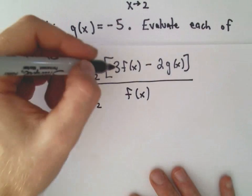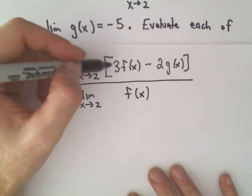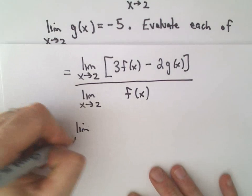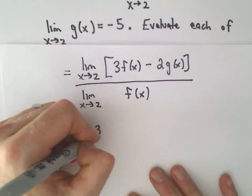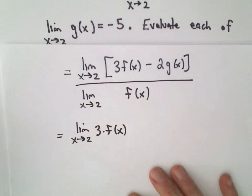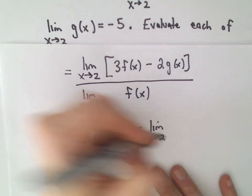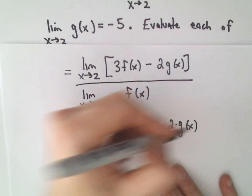There's also some more rules that say if you have addition and subtraction, you can look at the limit individually. So we'll have the limit as x approaches 2 of 3 times f of x minus the limit as x approaches 2 of 2 times g of x.